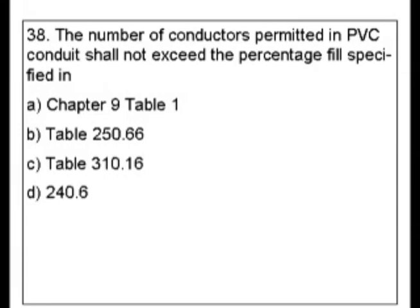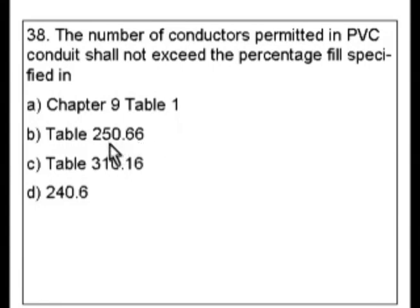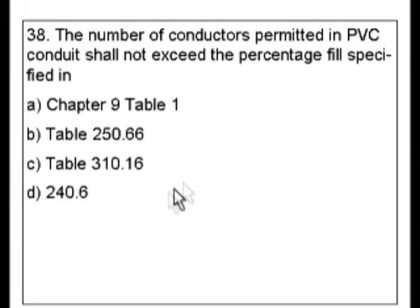Chapter 9 deals a lot with wire fills, so I would go with that. Now we're talking PVC. Each type of conduit has its own article in the code, and the conduits are in the 300s. The tables typically are going to be close to the article numbers. Knowing that Chapter 9 deals a lot with wire fills, I would go with that and then come back to this question.